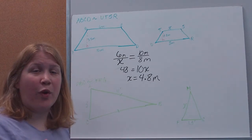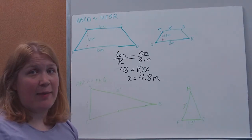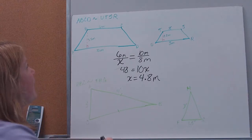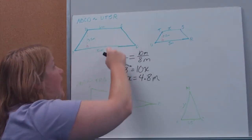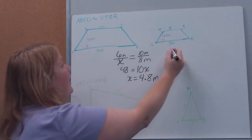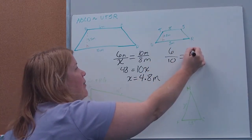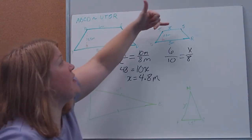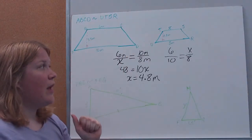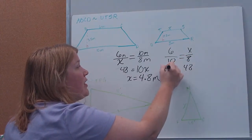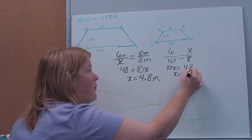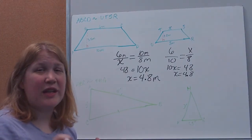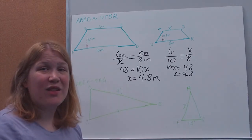That's all we're doing — just setting up our proportion. Maybe you set your proportion up differently and you'll still get the same answer. For example, you could do side-to-side on the big one and side-to-side on the small one: 6 to 10 would be the same as x to 8. Whatever I start with, I need to make sure I start with the same shape on both ratios — big to big and small to small, top to bottom, top to bottom. You'll notice I'm still multiplying the same numbers: 10x equals 48, x equals 4.8.